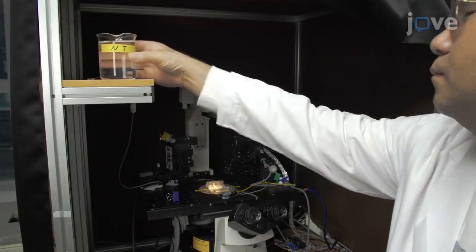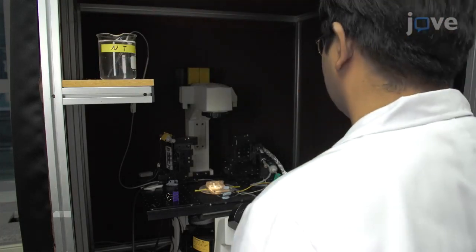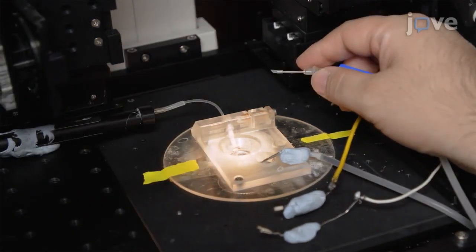In this procedure, place a container loaded with bathing solution above the patch clamp chamber. Next, fill the patch clamp chamber with the bathing solution by suctioning the tube.